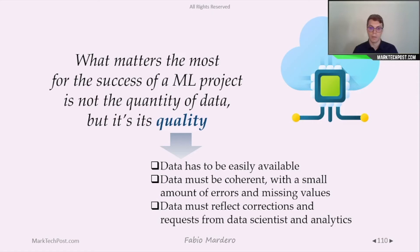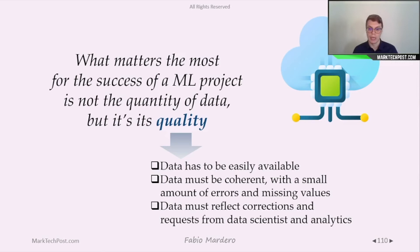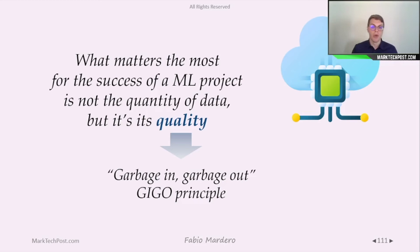In other cases, data needs to be collected via IoT sensors or labeled through data annotation. What matters most for the success of a machine learning project is not the quantity of data, but its quality. Data must be easily available — that's why we have a data engineer who builds the infrastructure. Data must be coherent, with a preferably near-zero amount of errors and missing values. Remember the GIGO principle: garbage in is always garbage out, so you must first work on the quality of the data you are using.